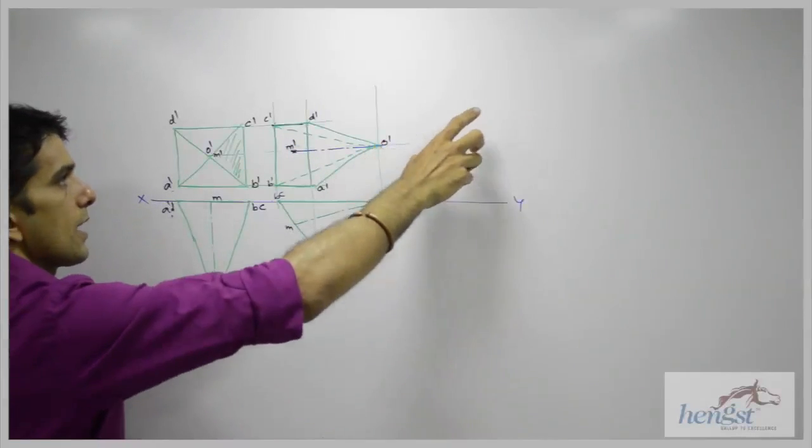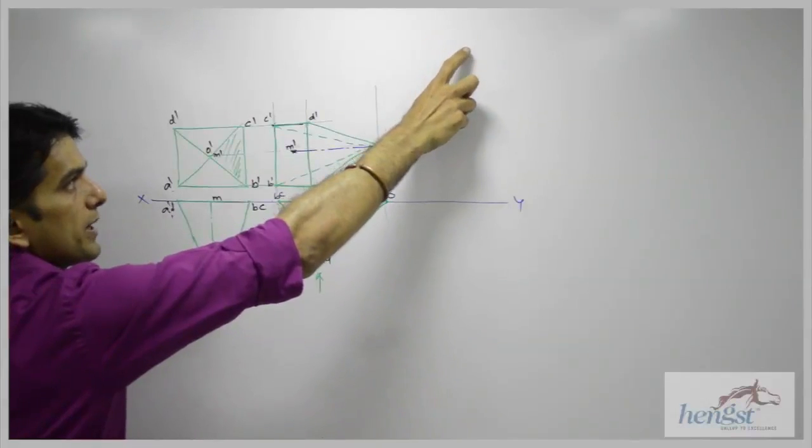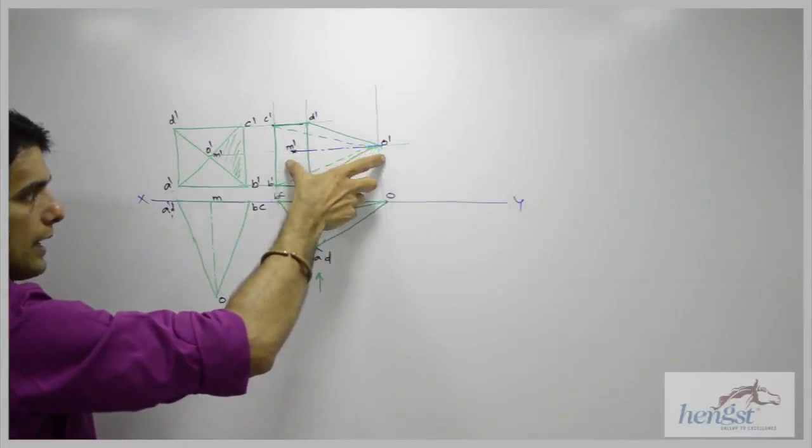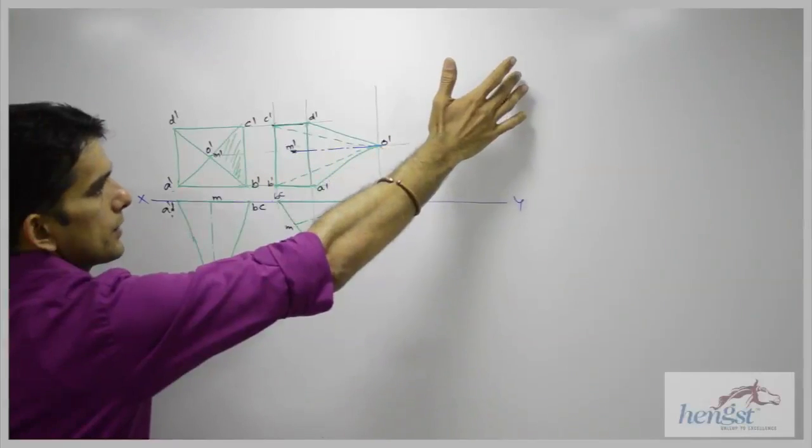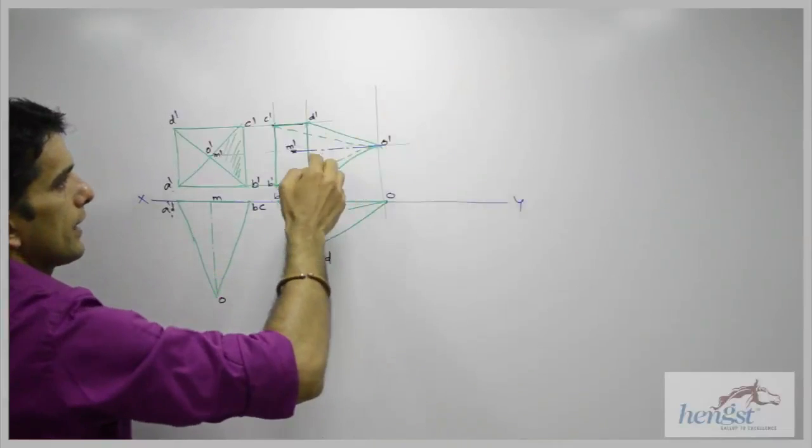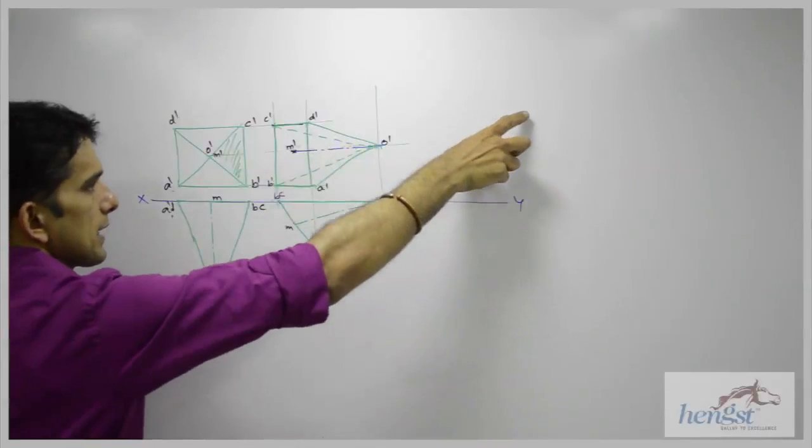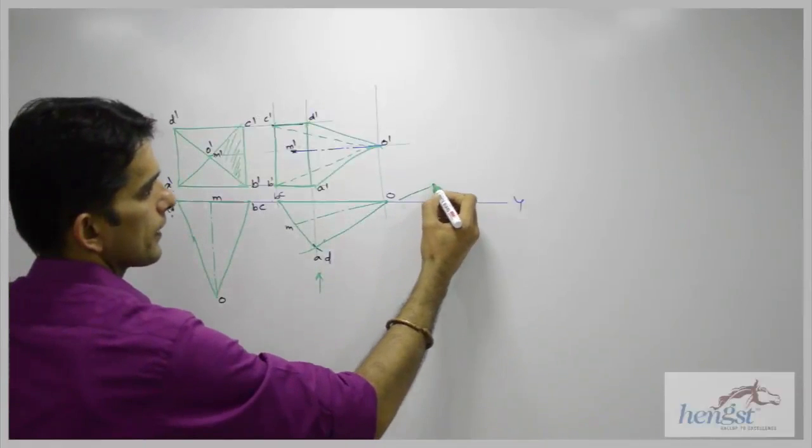And apex is nearer to the observer. Now in this case, in front view, our observer will be at the top. So we need to draw it like this. So we need to draw it in such a fashion that O dash is above the x-y-m, away from the x-y-m. And O dash, M dash will be inclined at 30 degree. So we will draw 30 degree.